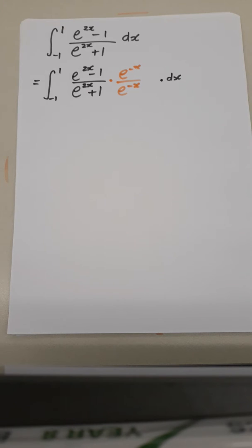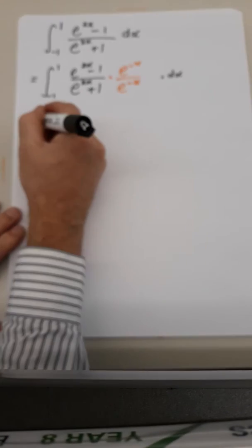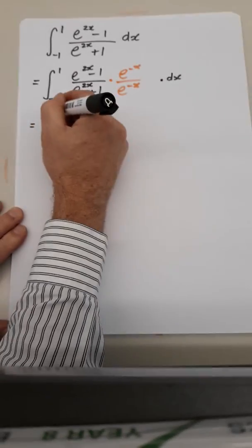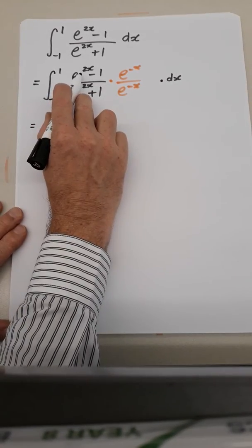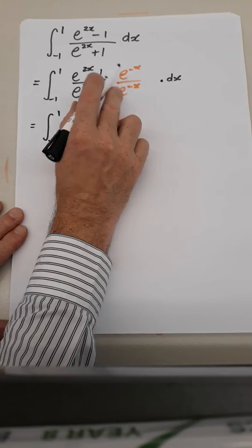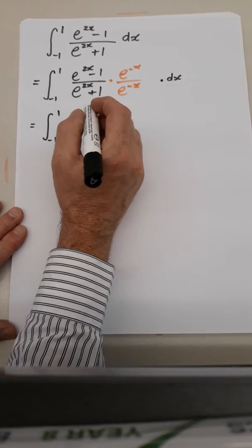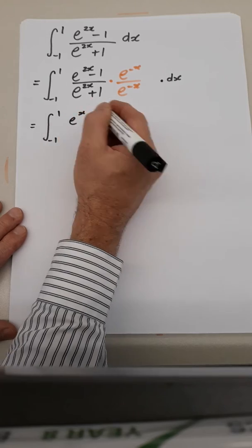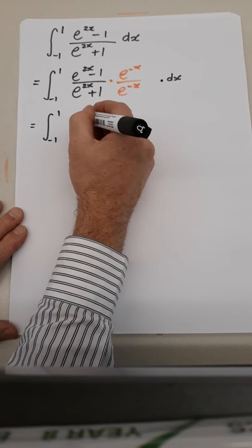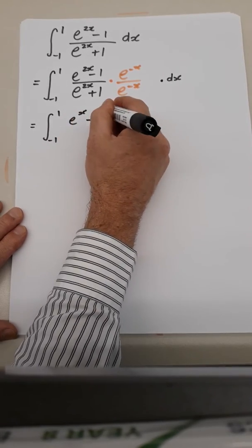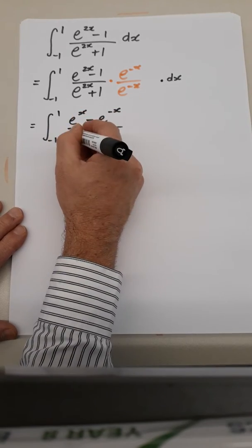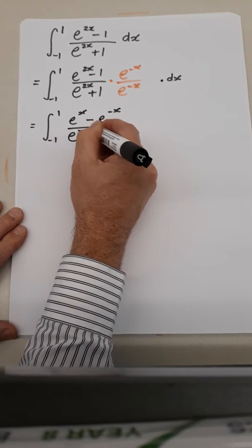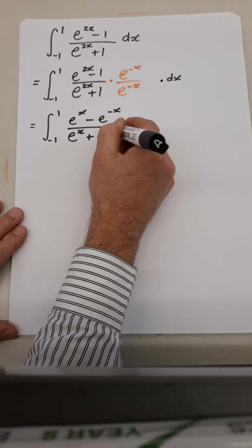But if you actually do that multiplication, you'll see where the inspiration is leading. So remember, when you're multiplying together with the same base, you add the indices. So that's going to give me e to the x, 2x minus x is x, minus e to the minus x on e to the x plus e to the minus x dx.